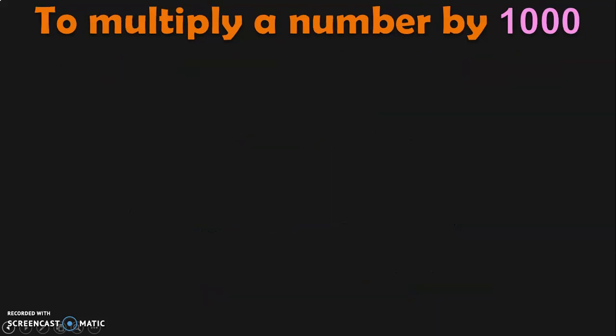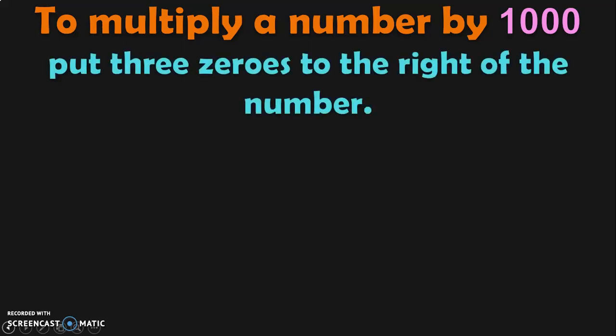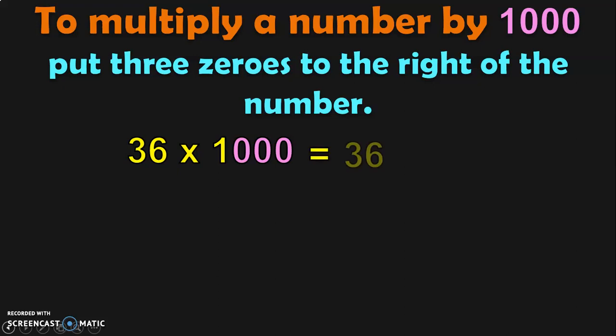Let us next move on to how to multiply a number by 1,000. To multiply a number by 1,000, put three zeros to the right of the number. Let us do an example: 36 into 1,000. Write down the number 36 and follow it with three zeros. This is a 5-digit number. Putting the periods, you will read the number as 36,000.